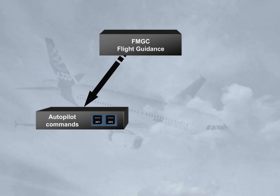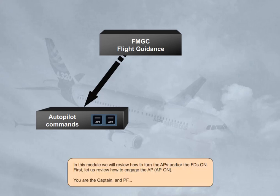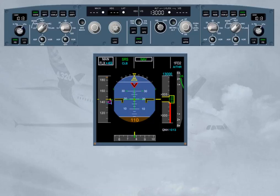Autopilot on. You are the captain and pilot flying. The autopilot is an assistance to the pilot to fly the aircraft. The autopilot works within the aircraft normal flight envelope. Therefore, the pilot can turn it on whenever the aircraft is within this flight envelope. Here, we are just airborne, above 100 feet from the ground. Engage Autopilot 1.